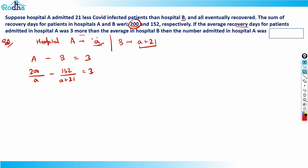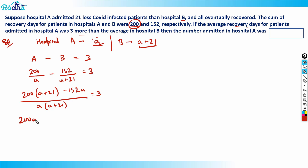200 is the sum of recovery days for hospital A and there are A COVID patients, so the average is 200/A. Now solving: taking the common denominator, we get 200(A+21) minus 152A divided by A(A+21) equals 3. Expanding the numerator: 200A plus 4200 minus 152A equals 3 times (A² plus 21A), which gives 48A plus 4200 equals 3A² plus 63A.